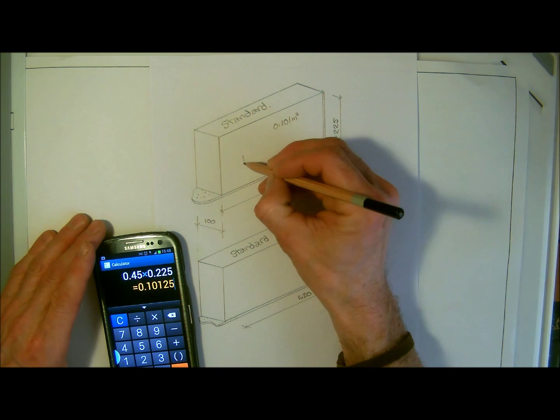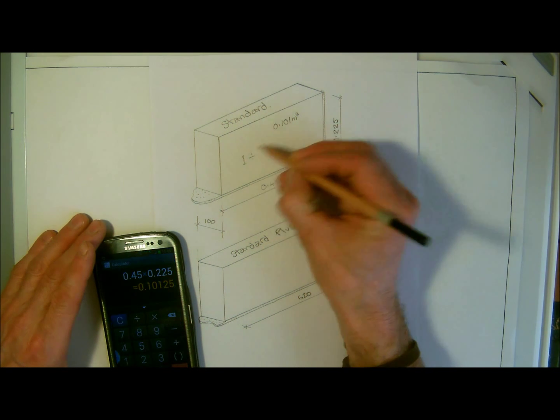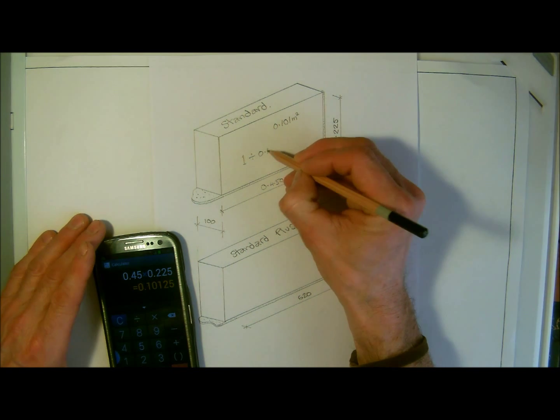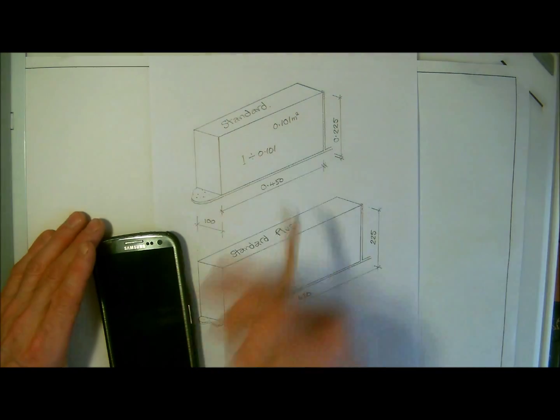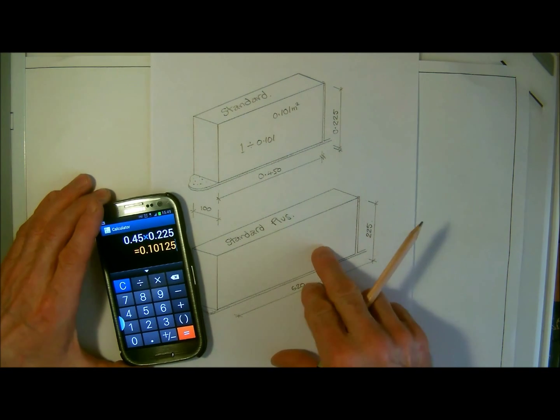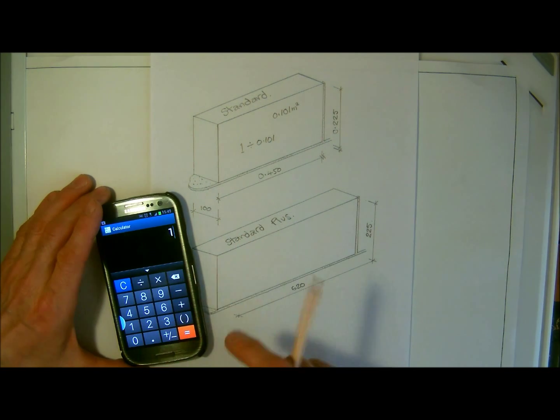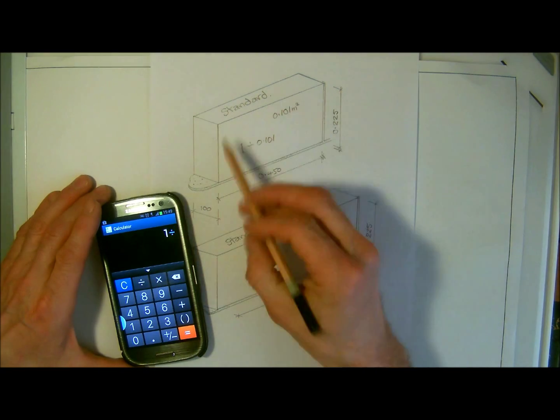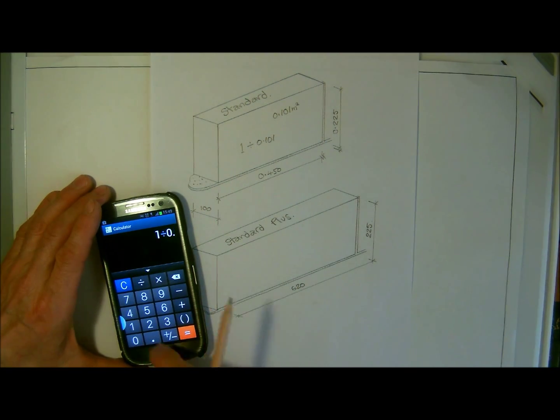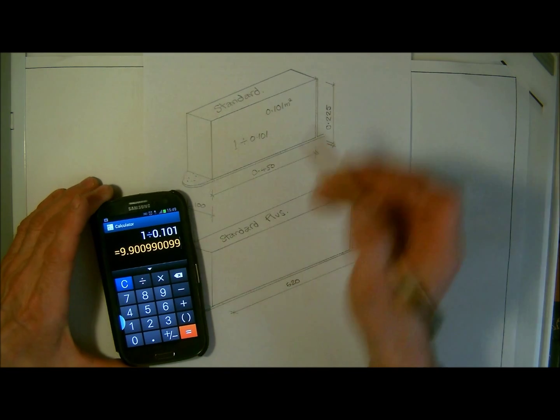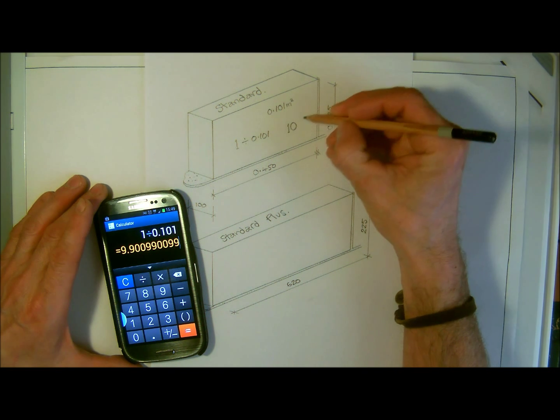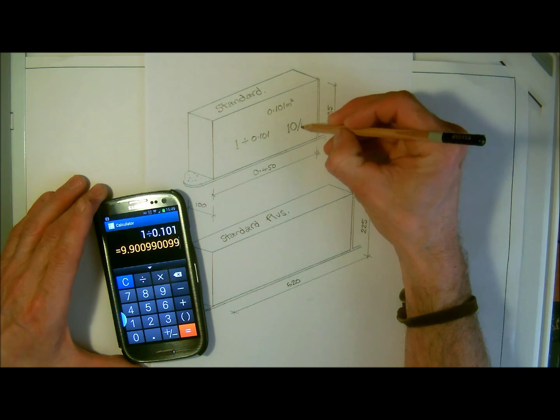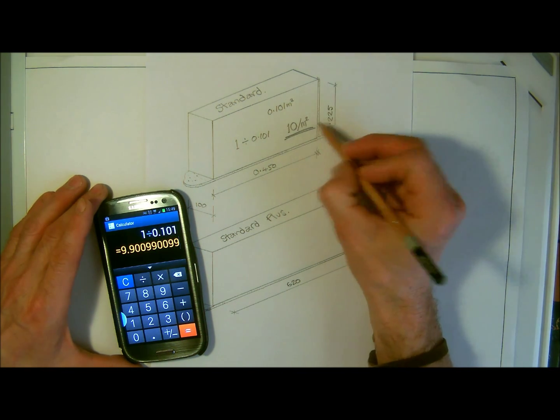So, the way that I do this, I will say 1 divided by that figure that we've just got, because 1 just represents our metre square. So we've got a square metre, and this is how I do this. So we'll just get rid of that, 1 for my square metre, divided by what we've worked out each block is going to be, which is going to be 0.101. And we can see straight away that when we do the equals, we've got 9.9. So, we always say, with a standard block, 9.9, obviously we're going to say 10 blocks per metre squared. So, 10 per metre squared, underlined.